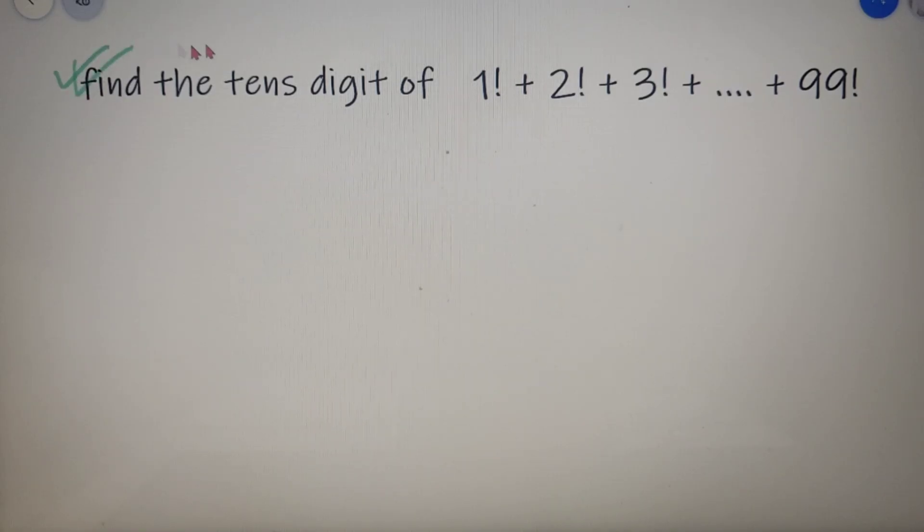Now try to solve this question by yourself: find the tens digit of 1 factorial plus 2 factorial all the way up to 99 factorial. So the question remains the same, just you have to find the tens digit of the same number.